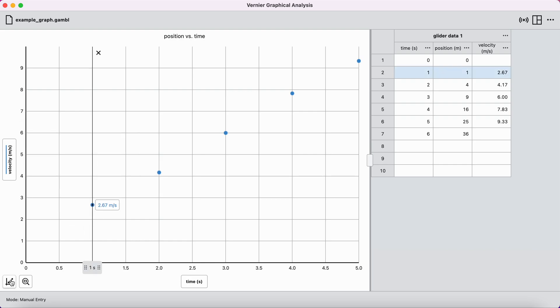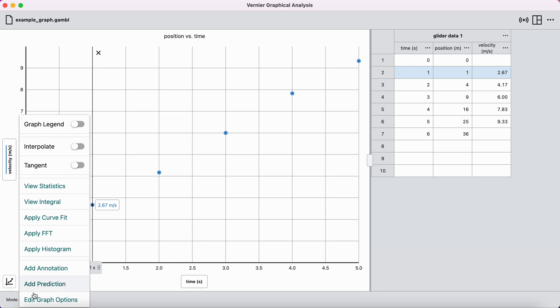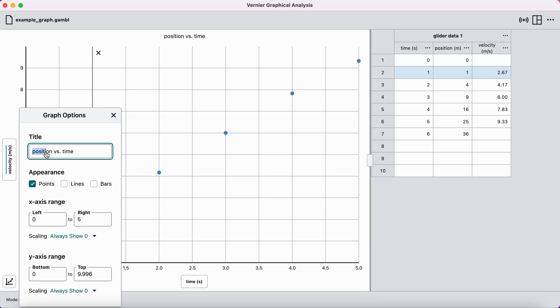I can see that I need to go in here and retitle this now. So, I go to edit graph options where it says velocity versus time. My double check points are checked. Lines and bars are off. And then my x-axis range always shows 0. My y-axis range always shows 0. And boom. There we go.